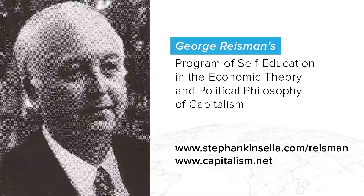In year 2, productive spending is 880 and costs are 800 (reflecting the lower productive spending of year 1), giving net investment of 80. In year 3, productive spending rises to 968, costs rise to 880, and there's net investment of 88. In the following year, 97.